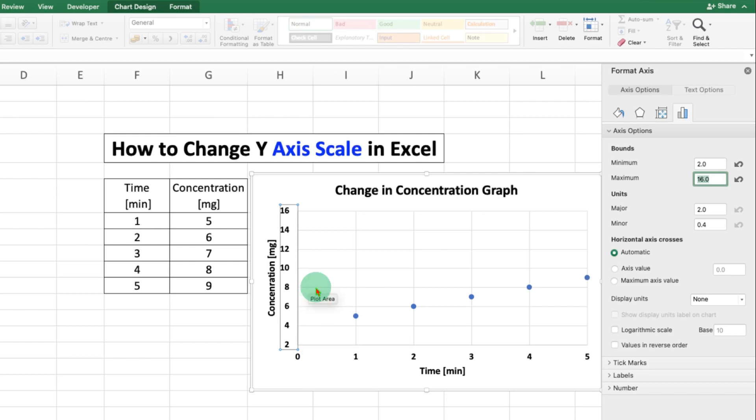If you want to change the difference, under the major setting you can change it from here. For example, instead of 2, I will enter 4 and press Enter. As you can see, it now shows 2, 6, 10, 14.